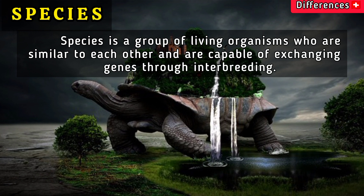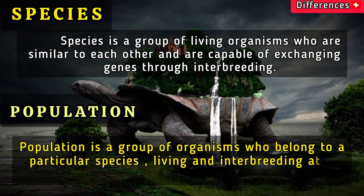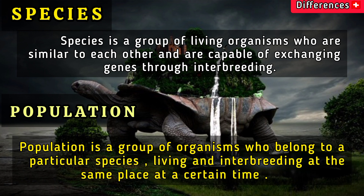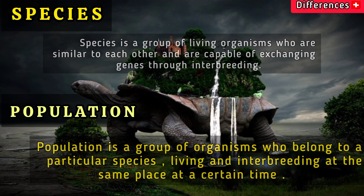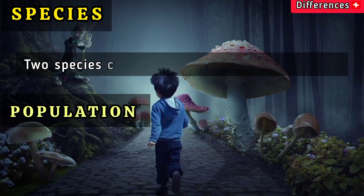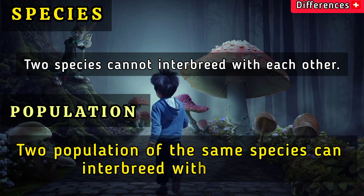A population is a group of organisms who belong to a particular species, living and interbreeding at the same place at a certain time. Two species cannot interbreed with each other, whereas two populations of the same species can interbreed with each other.